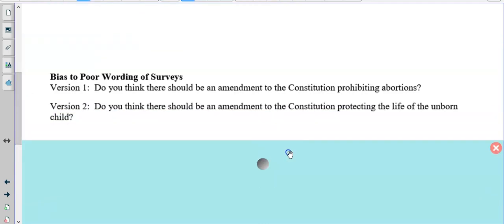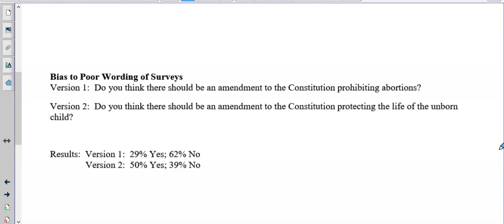So bias due to poor wording of surveys. Version one, do you think there should be an amendment to the constitution prohibiting abortions? Or it could be worded like this. Do you think there should be an amendment to the constitution protecting the life of the unborn child? These both hit different emotions the way it's worded. Not going to say which one is right or wrong, one better than the other, just saying they do hit differently. So version one got 29% yes and 62% no, whereas version two got 50% yes and 39% no.